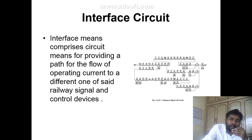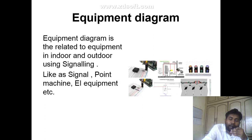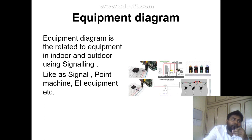An interface circuit is a circuit providing a path for the flow of operating current to different sides of a railway signal and control device.